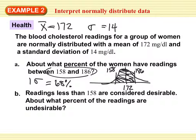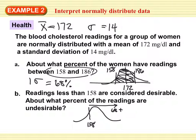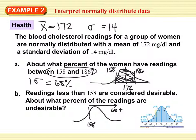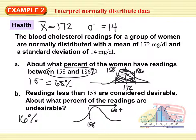Readings less than 158 are considered desirable — about what percent of the readings are undesirable? So if we look, 158 is desirable and everything else is not. We're looking for the addition of all the other percentages. So we would add 13.5% plus 2.35% plus 0.15%, and that gives us 16% of the readings are actually desirable.